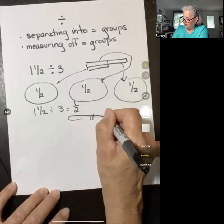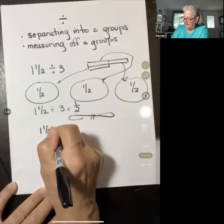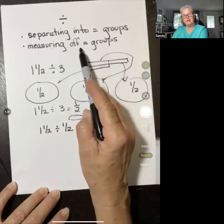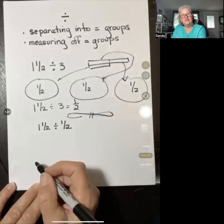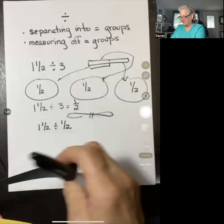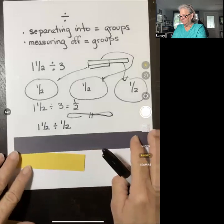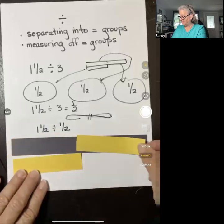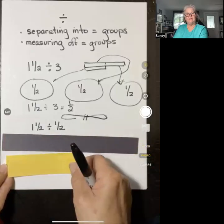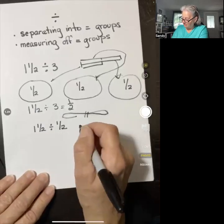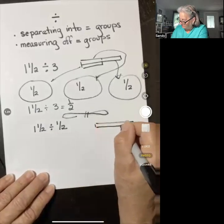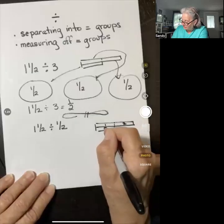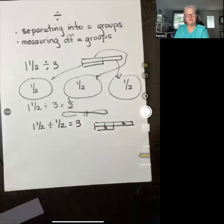Now, that other problem that I showed was one and a half divided by one half. This one I'm going to read using language associated with measurement division. How many halves are in one and a half? It's a measurement idea. So if I have my one and a half here, what I'm going to do is I measure off how many of these the size piece can I measure off here? Well, one, two, three.